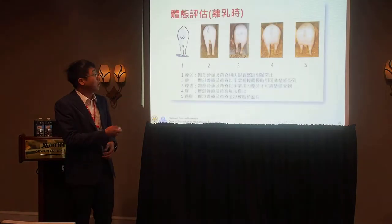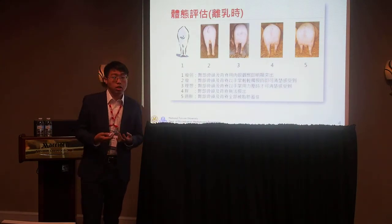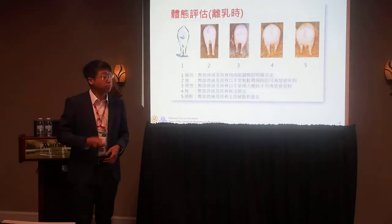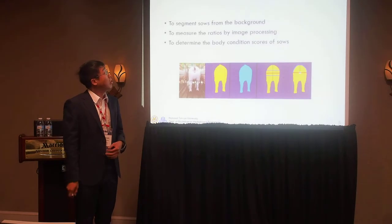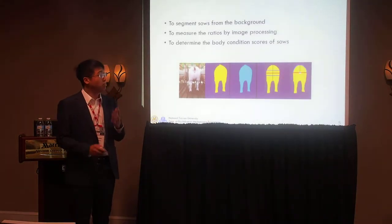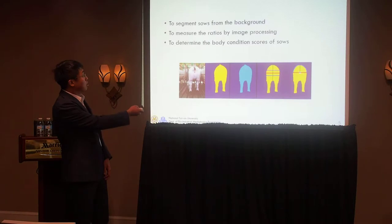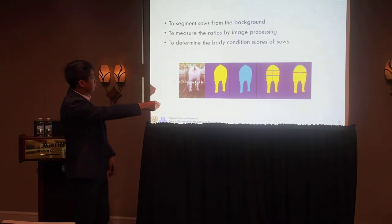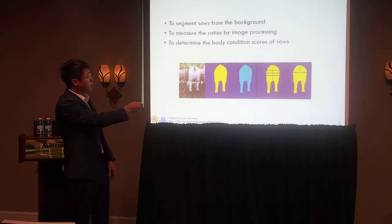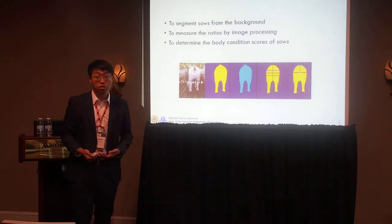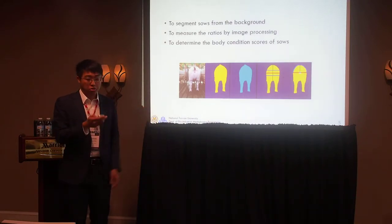In Taiwan, most body condition scores are scored on a scale of 1 to 5. My objective is to segment sows from the background, measure the ratios by image processing, and determine the body scores from these ratios.